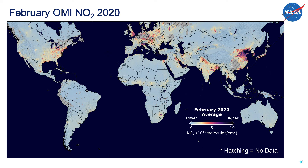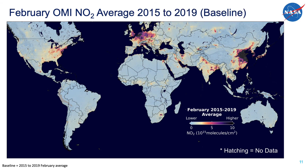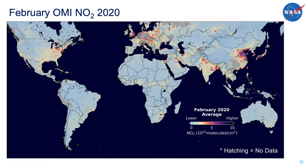Now that you have seen the incredible value of this long-term global OMI NO2 dataset, I want to shift to what happened in 2020. Here is the global NO2 map for February 2020. To make a more meaningful comparison, we are going to use the five-year average of all the Februaries between 2015 and 2019 — we will call this the NO2 baseline. The primary change was a big decrease in NO2 pollution over China. In late January, China was the first country to go into a COVID lockdown, and OMI does a good job of capturing that decrease.